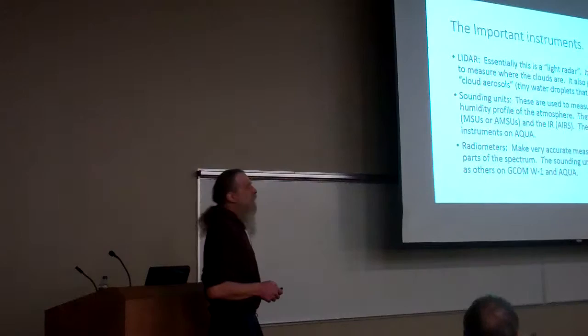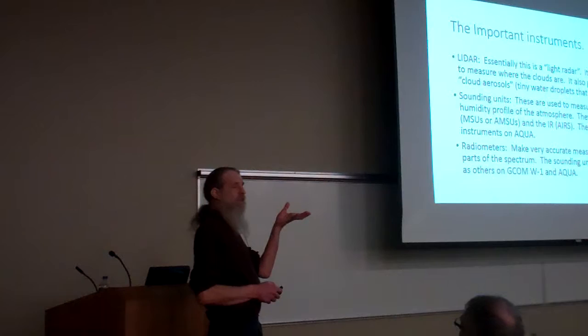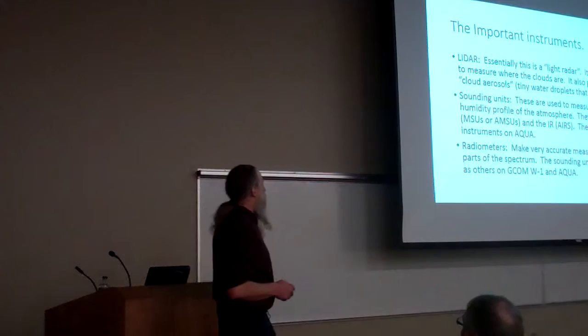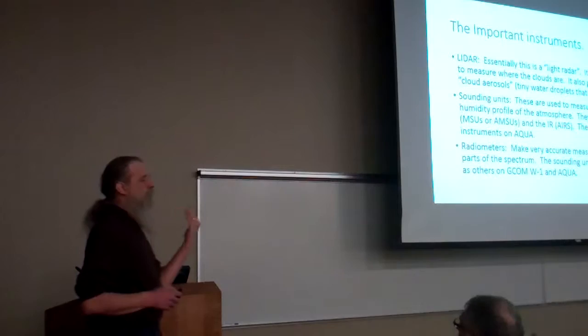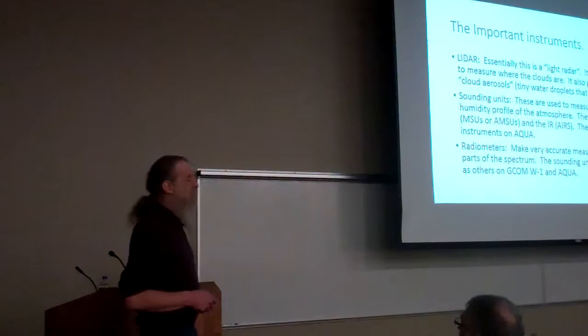Radiometers: many of you may remember a child's toy — a radiometer with black and white vanes in a glass bottle that turns when exposed to incandescent light. There's the old myth that radiometers turn because of radiation pressure, which is not true. They turn because the gas inside is heated unevenly due to the black versus white sides of the vanes. It turns out that many of the instruments we have, including the sounding units, are essentially radiometers.